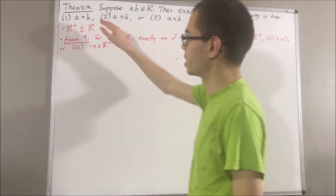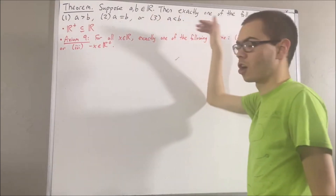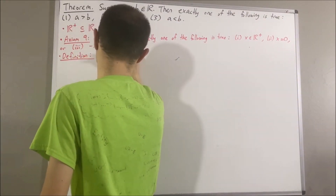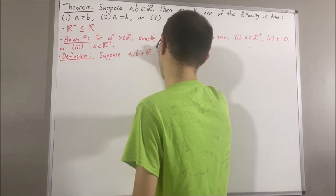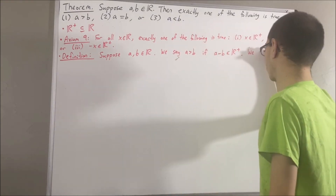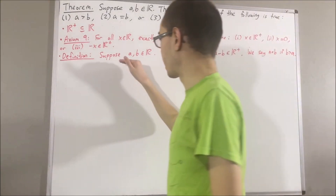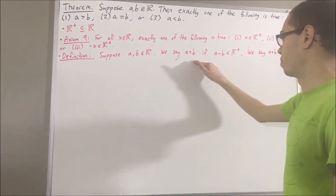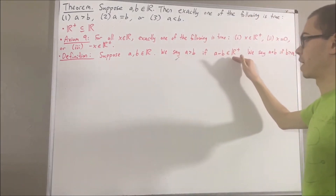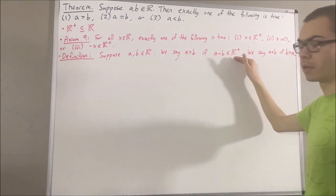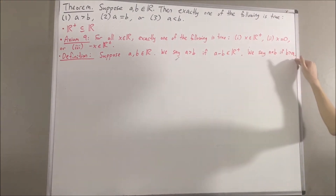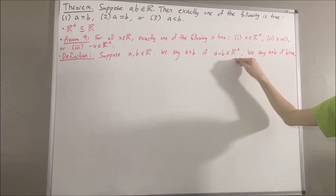Our definitions of greater than and less than are as follows. Suppose a and b are real numbers. We say a is greater than b if a minus b is a positive real number. And we say a is less than b if b is greater than a, where b is greater than a comes from the definition of greater than.